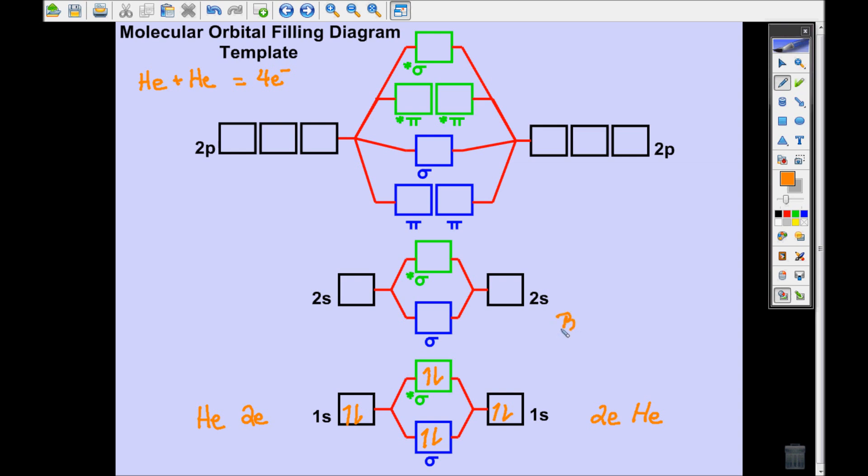If I'm going to calculate the bond order of helium, a helium molecule, I'm going to have two bonding electrons minus two antibonding electrons, and that's going to be divided by two. Two minus two is zero.